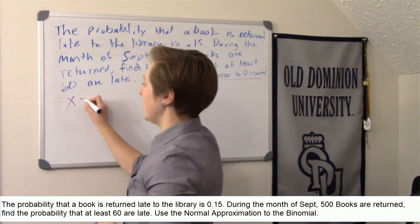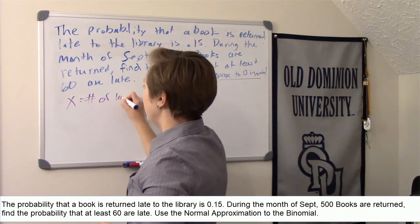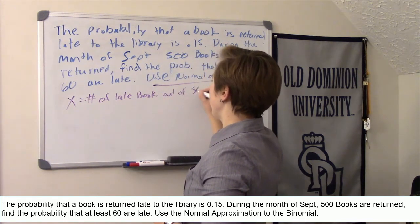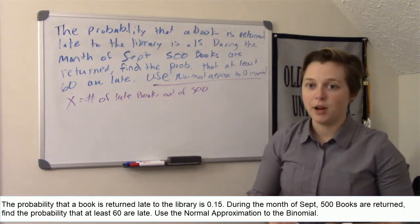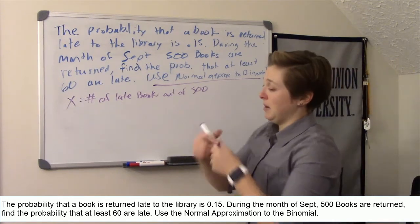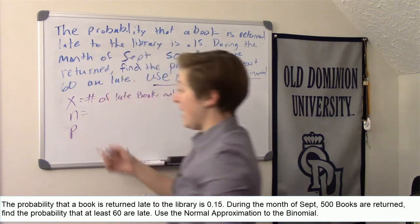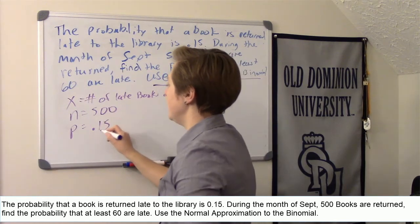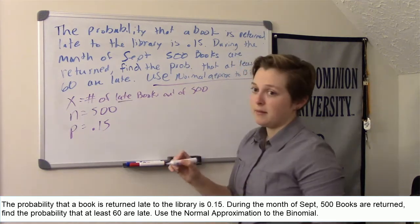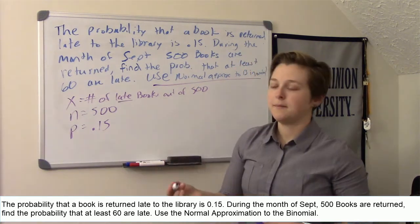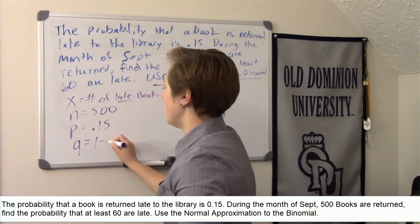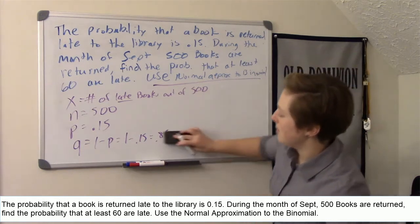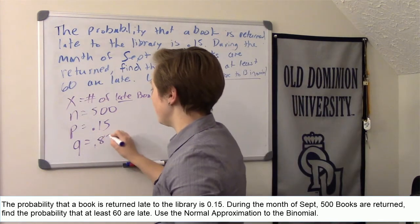So what are we trying to do? Well, let's go ahead and define what x is. So x is going to be the number of late books out of 500. So that's our binomial random variable x. Since it's a binomial distribution, let's also talk about what are n and p. Remember, n is the number of trials in a binomial distribution, so we have 500 trials. p is the probability of a success. In this case, since x is defined as being late, then p will also be the probability of being late. Remember on binomial, we also have q, which is 1 minus p. So that's 1 minus 0.15, which is 0.85. Actually, let me just save some board space and write that down here.